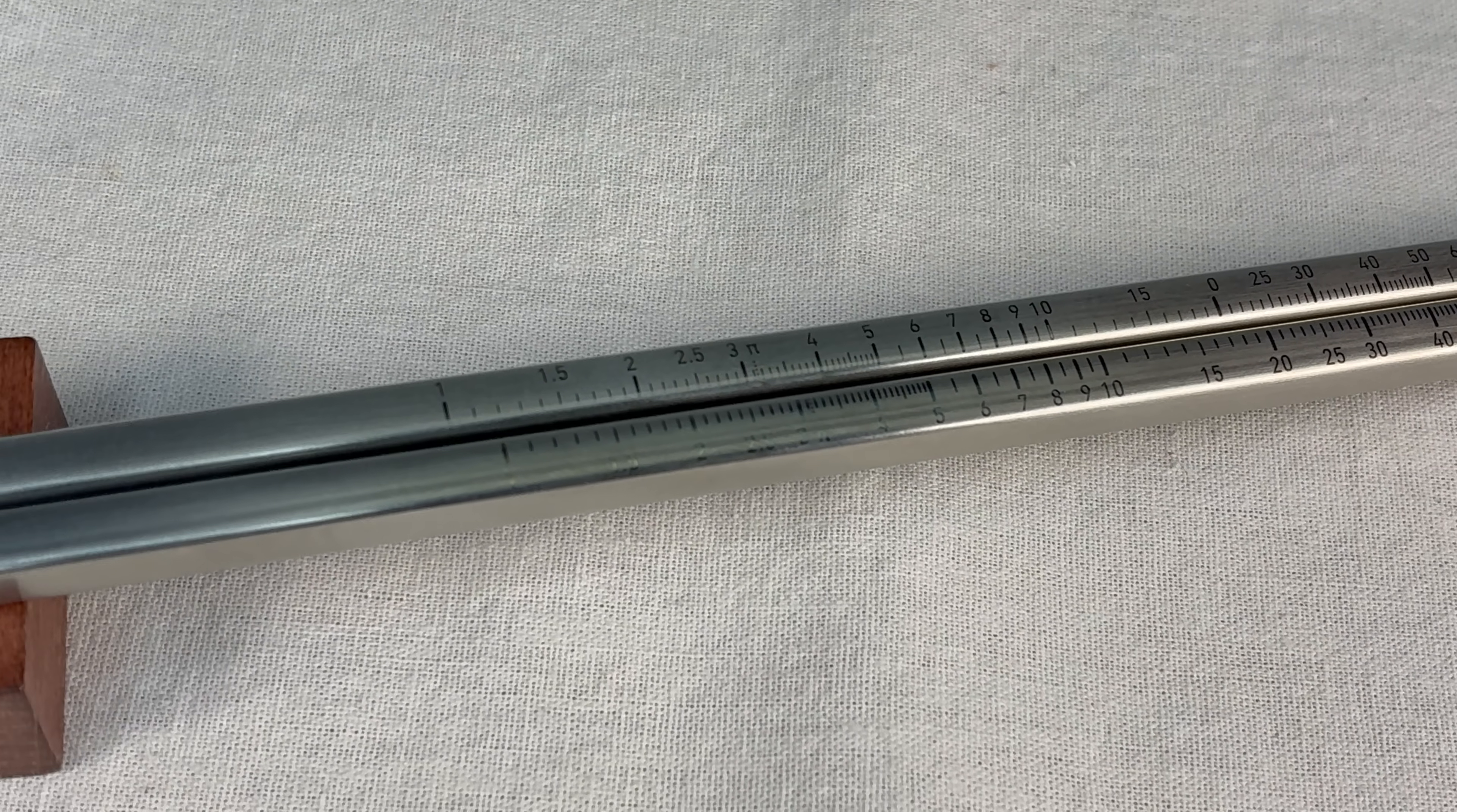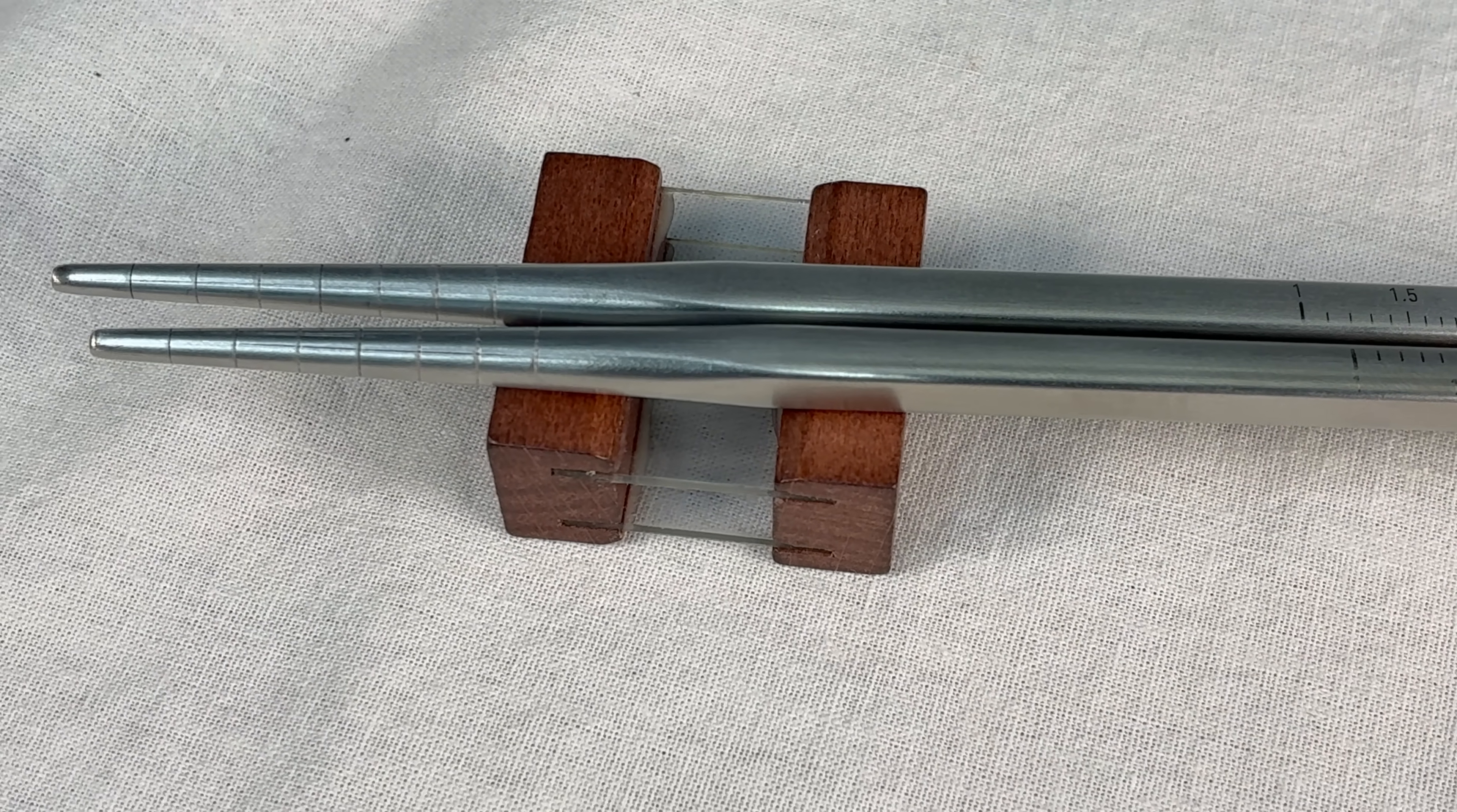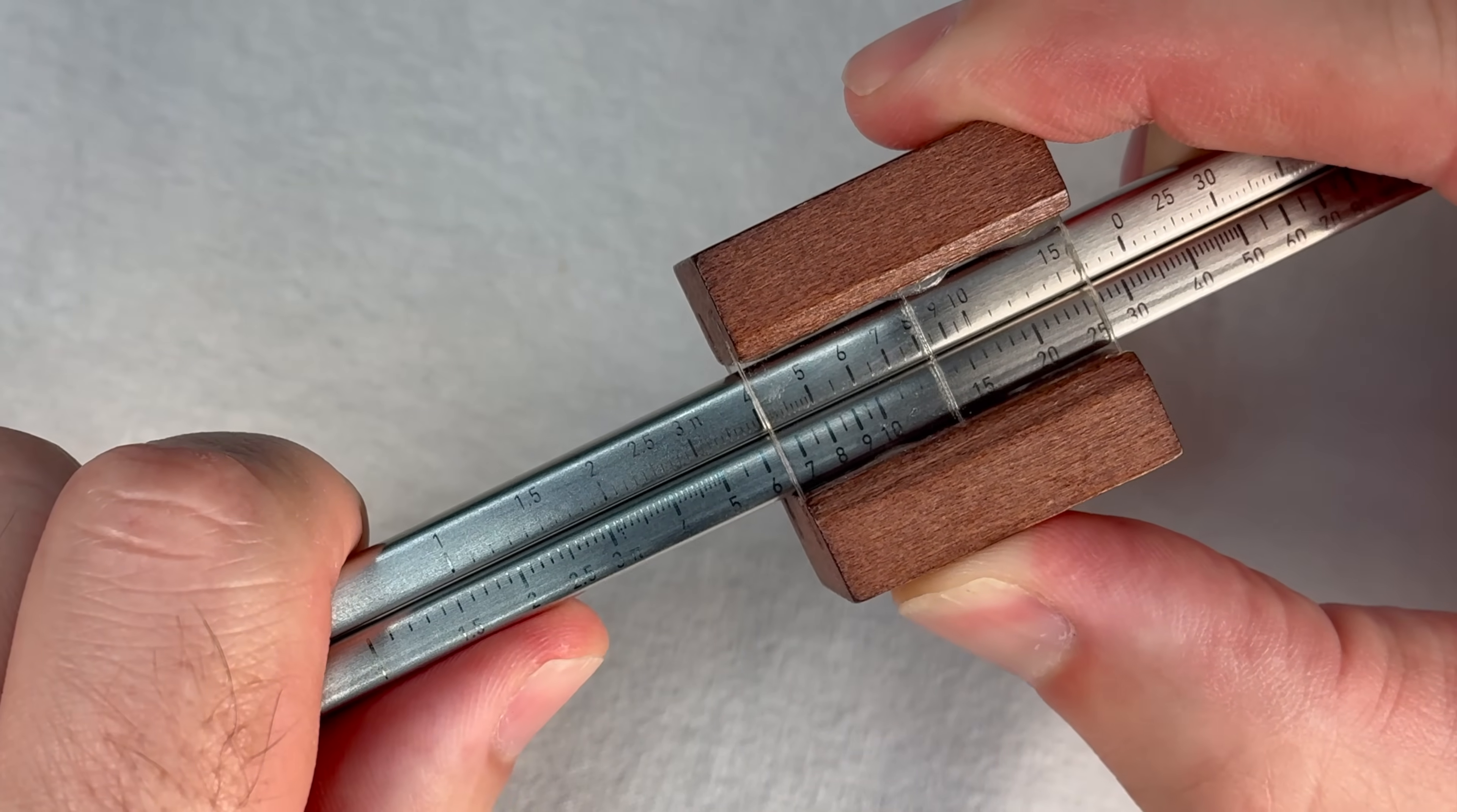They're square profile stainless steel with some ridges down at the bottom, and like any classy chopsticks they come with the little stand thing. And that thing is the lineup thing for the slide rule. They thought of everything.